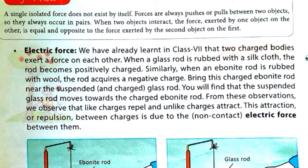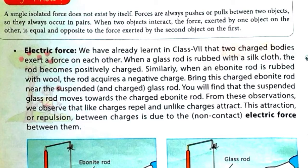The next non-contact force is electric force. Two rods are given: the first is an ebonite rod and the second is a glass rod. When you bring the glass rod towards the ebonite rod, they show different types of charges — positive charge on one rod and negative charge on the other. When you rub the same type of rods, they show similar charges. Like charges repel each other and unlike charges attract each other.